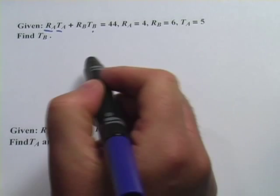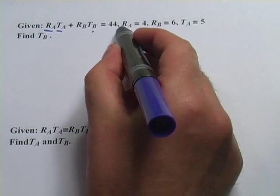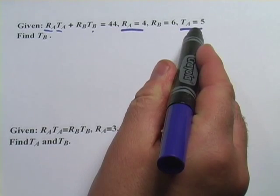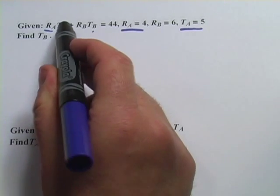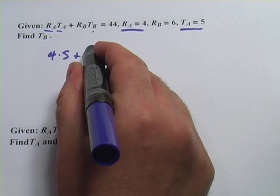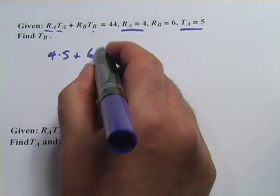So really the way to go about this is to start subbing in. We have r sub a plus t sub a. They're telling us r sub a and t sub a. r sub a is 4, t sub a is 5. So this is 4 times 5 plus r sub b is 6.